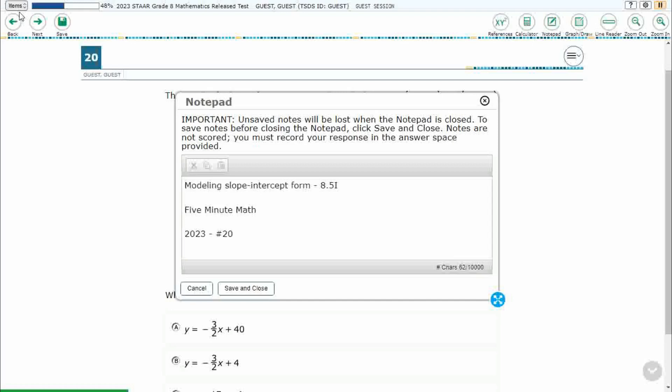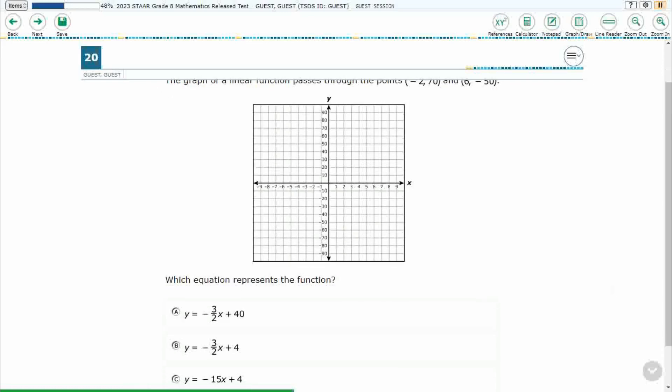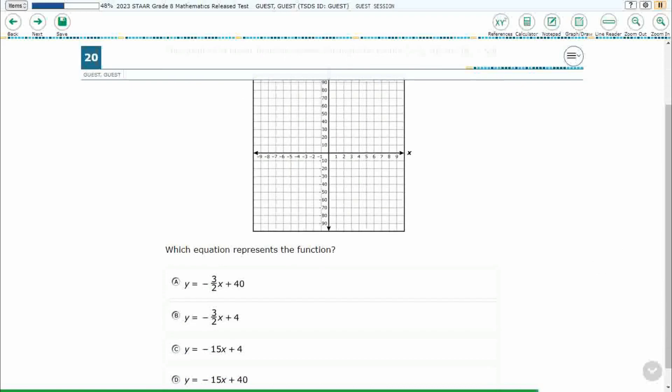Hello, and welcome to 5-Minute Math. Today we are looking at the 8th grade concept of Modeling Slope Intercept Form. This is standard 8.5i in the great state of Texas. We are using item number 20 of the 2023 released STAAR test. If you haven't done so already, please take a moment to pause the video, work this problem out on your own, unpause it, and we will look at our answers together.